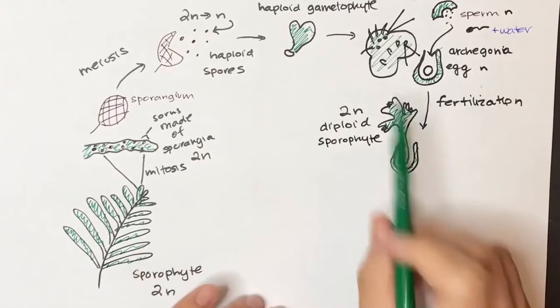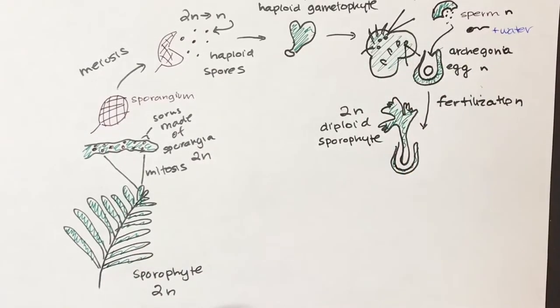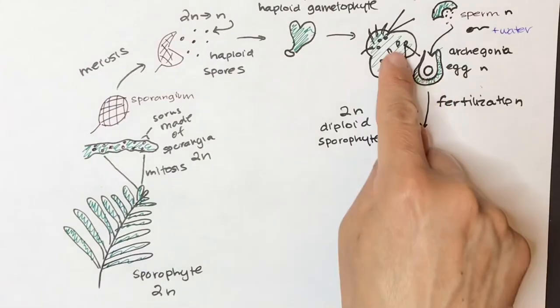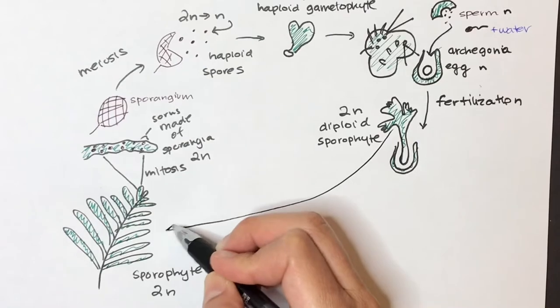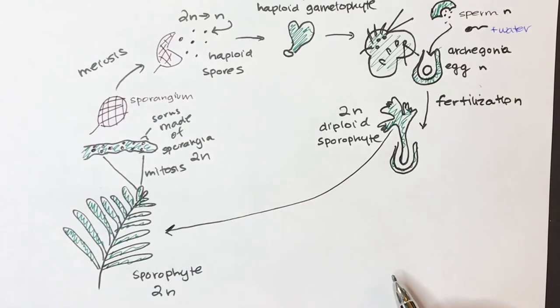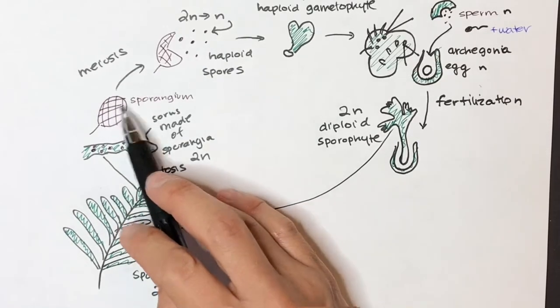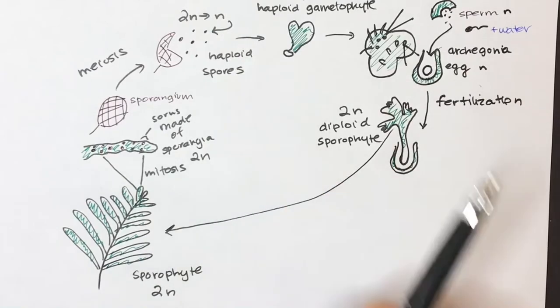And if we zoom out enough, we'll see that it's growing out of this gametophyte. Right. So this archegonium is right on here on the gametophyte. And this little 2N sporophyte is going to eventually grow up into a whole adult that can undergo meiosis in its sporangia to make these haploid spores.